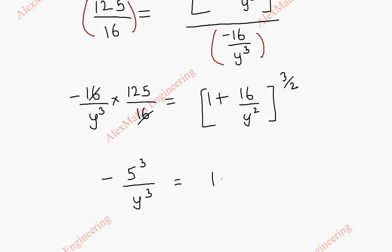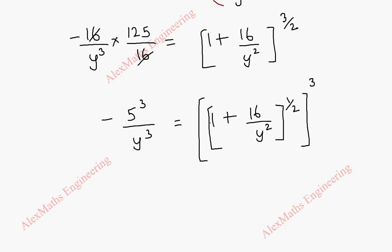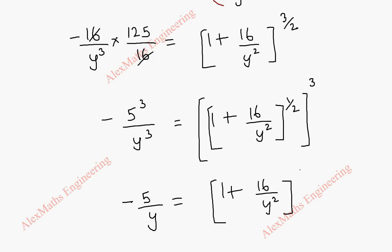We rewrite the right side — 1 plus 16 by y squared — as a whole to the power 3/2, which we express as (whole power 1/2) cubed. This allows us to remove the cube power on both sides, giving minus 5 by y equals (1 plus 16 by y squared) to the power 1/2.